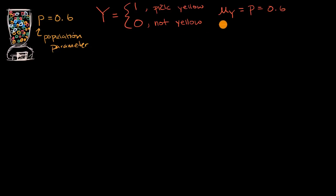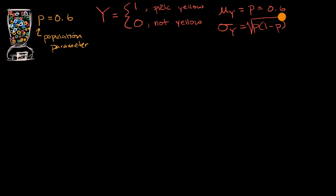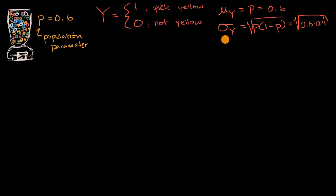And we know what the standard deviation of this Bernoulli random variable is. The variance is p times (1 − p), so we take the square root of that to get the standard deviation. In this particular scenario, that's going to be the square root of 0.6 times 0.4.